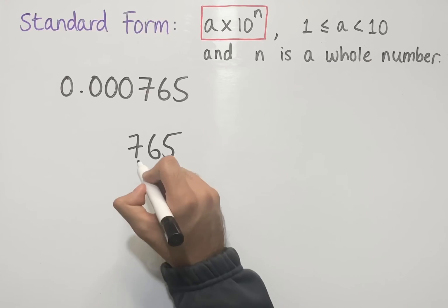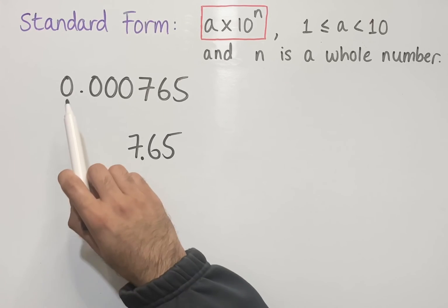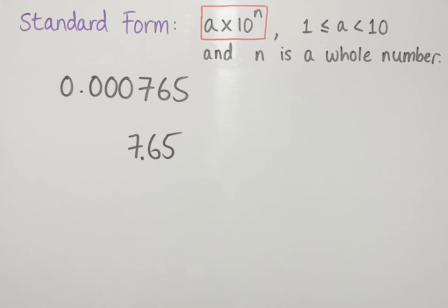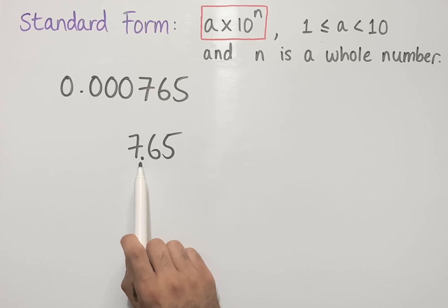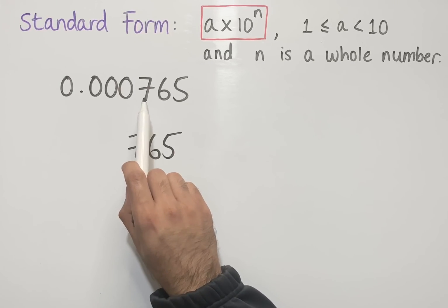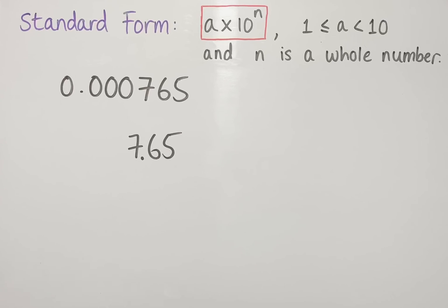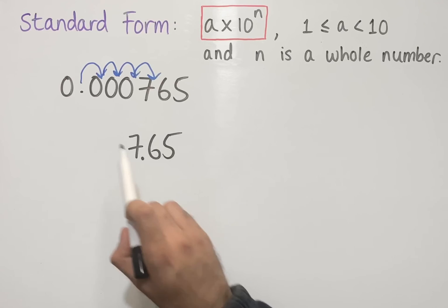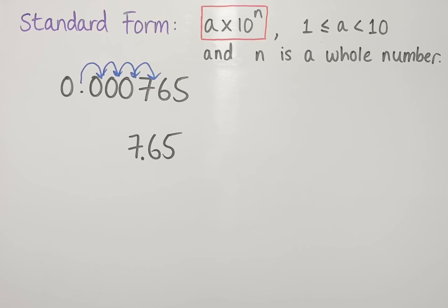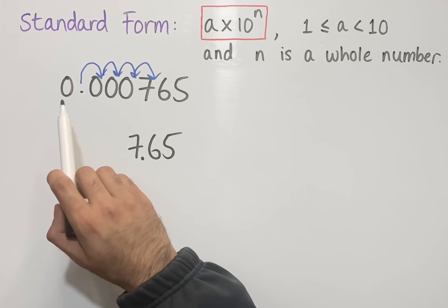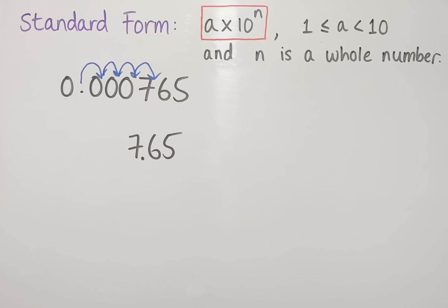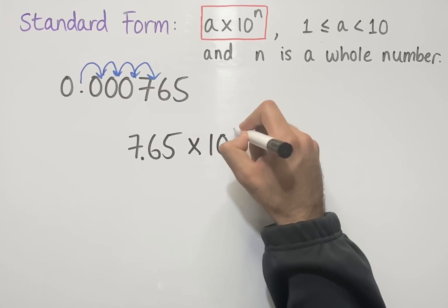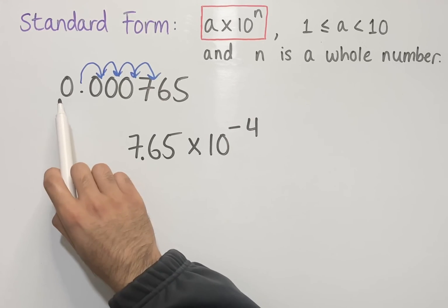If we place the decimal point between the 7 and the 6, we get 7.65. The next step is to think about how many decimal places the decimal point moves so that it ends up between those two digits. We need the decimal point to be between the digits 7 and 6, and counting the place values we move: 1, 2, 3, 4. To get from 7.65 to 0.000765 we need to divide by a power of 10, or multiply by 10 to the power of some negative number. Since the decimal point moved 4 spaces to the right, our power of 10 is minus 4, and we've written this ordinary number in standard form.